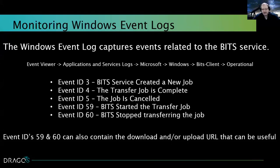Event IDs 59 and 60 relate to starting and stopping the job. The interesting thing about both these IDs is they also contain the download or upload URLs. So if the machine does have internet access, looking at these event IDs will tell you where BITS is going to download jobs from. If something is being downloaded from a source that's not normal, you'd be able to see that in Event Viewer natively.